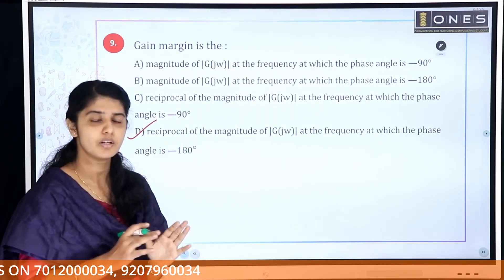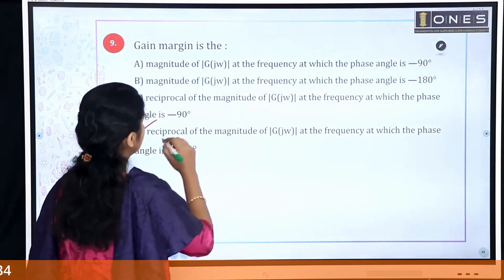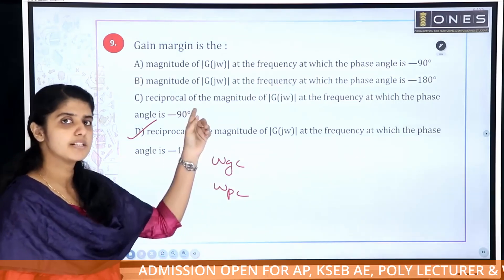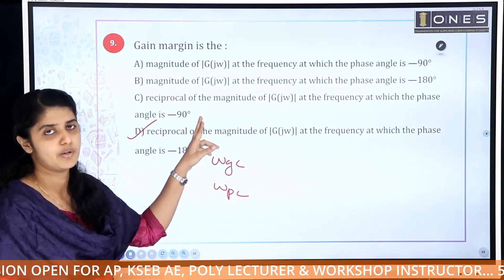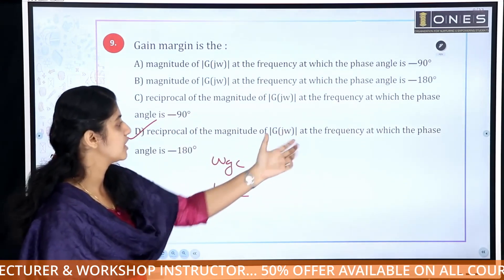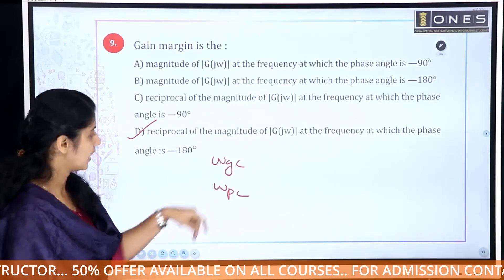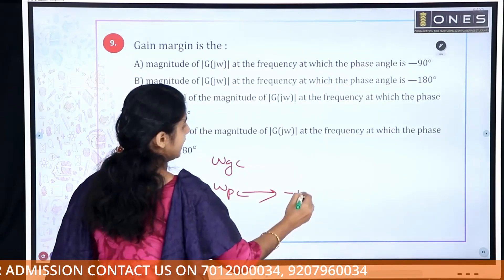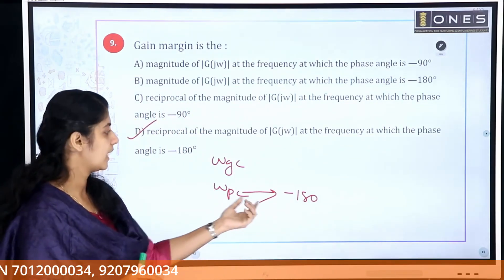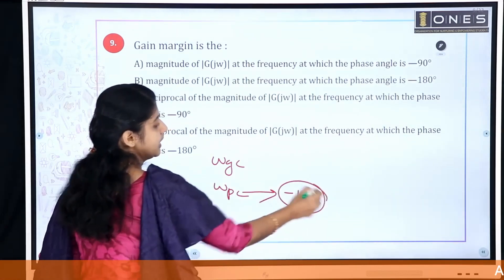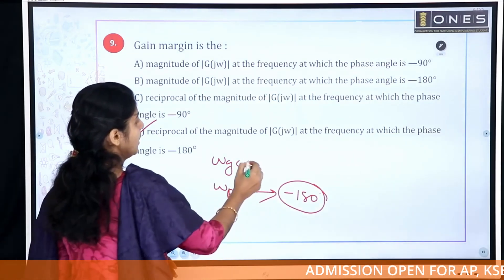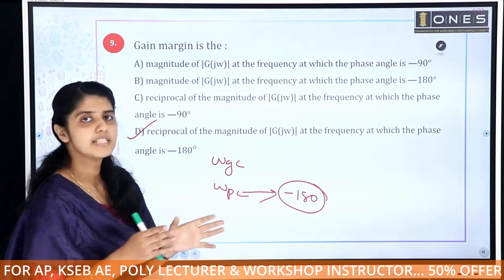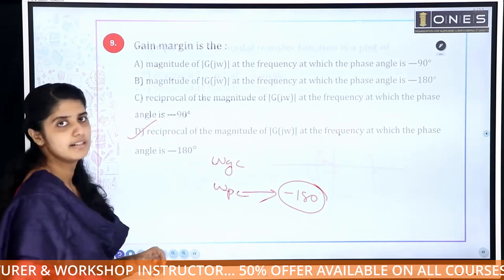What is gain margin? Gain margin is defined using the phase crossover frequency. The phase crossover frequency is where the phase angle equals −180°. The gain margin is the reciprocal of the magnitude of G(jω) evaluated at the phase crossover frequency, i.e., at −180°.